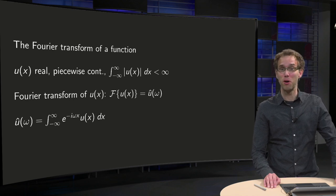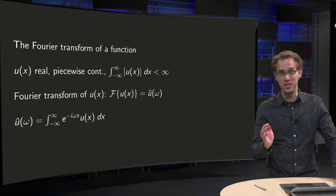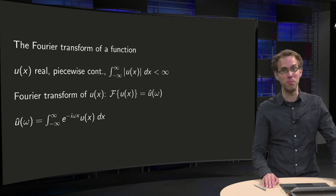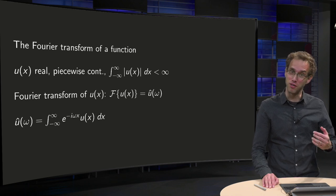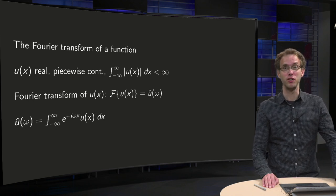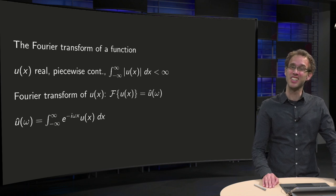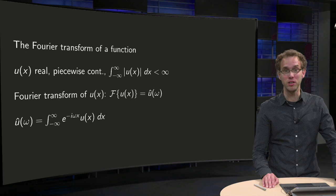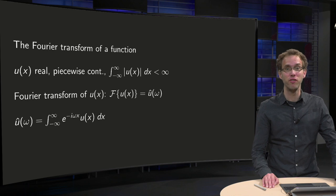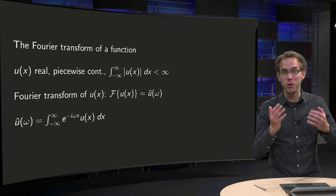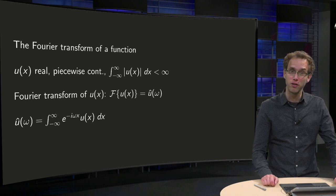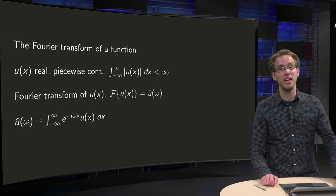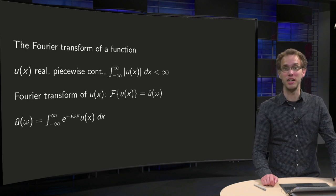The Fourier transform decomposes a function of time, a signal, into the frequencies that make it up, in a way similar to how a musical chord can be expressed as the frequencies or pitches of its constituent notes. This signal decomposition is used a lot in engineering applications. In this series of videos we will focus on the technical, on the calculational part: how do we compute such a transform? For the original function we will use the variable x, even though it is originally seen as time.